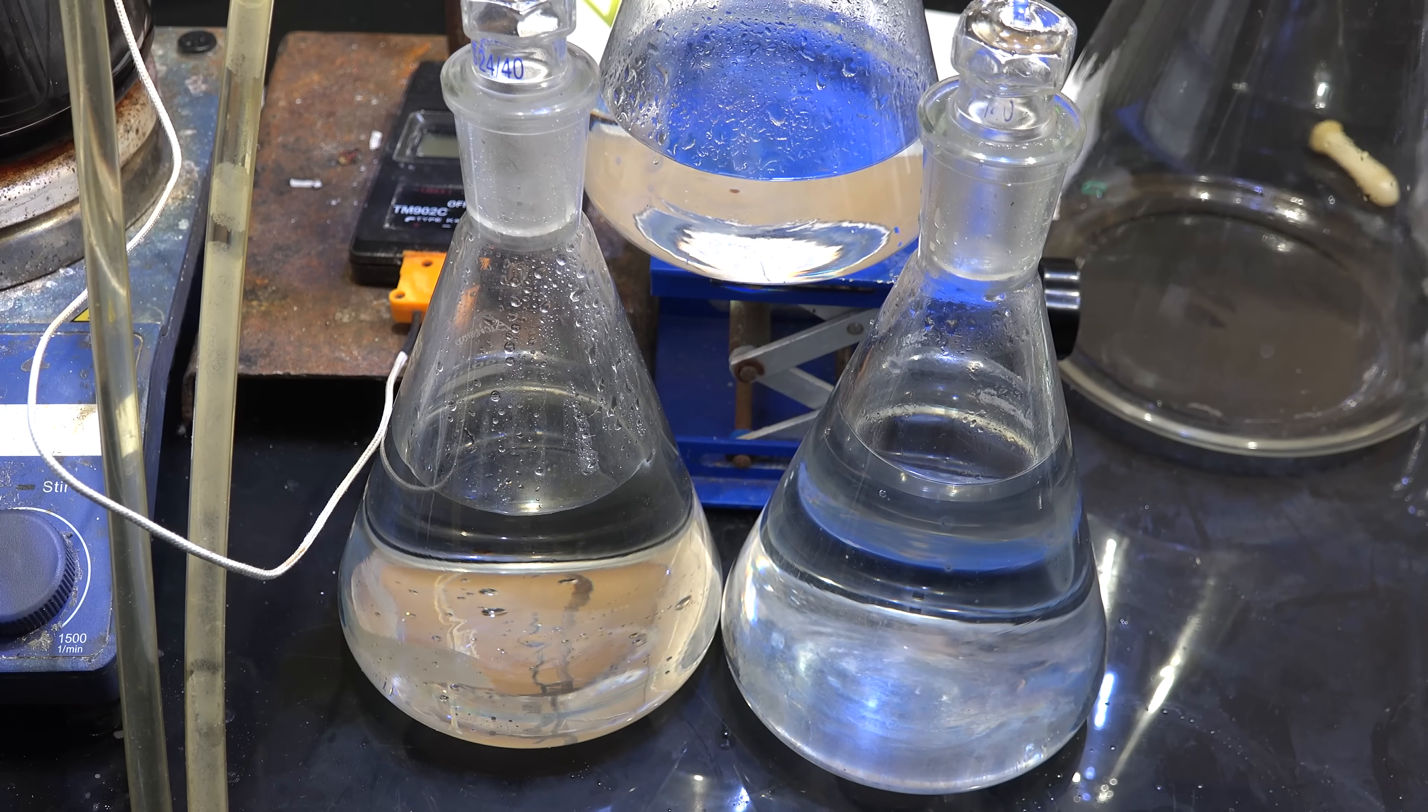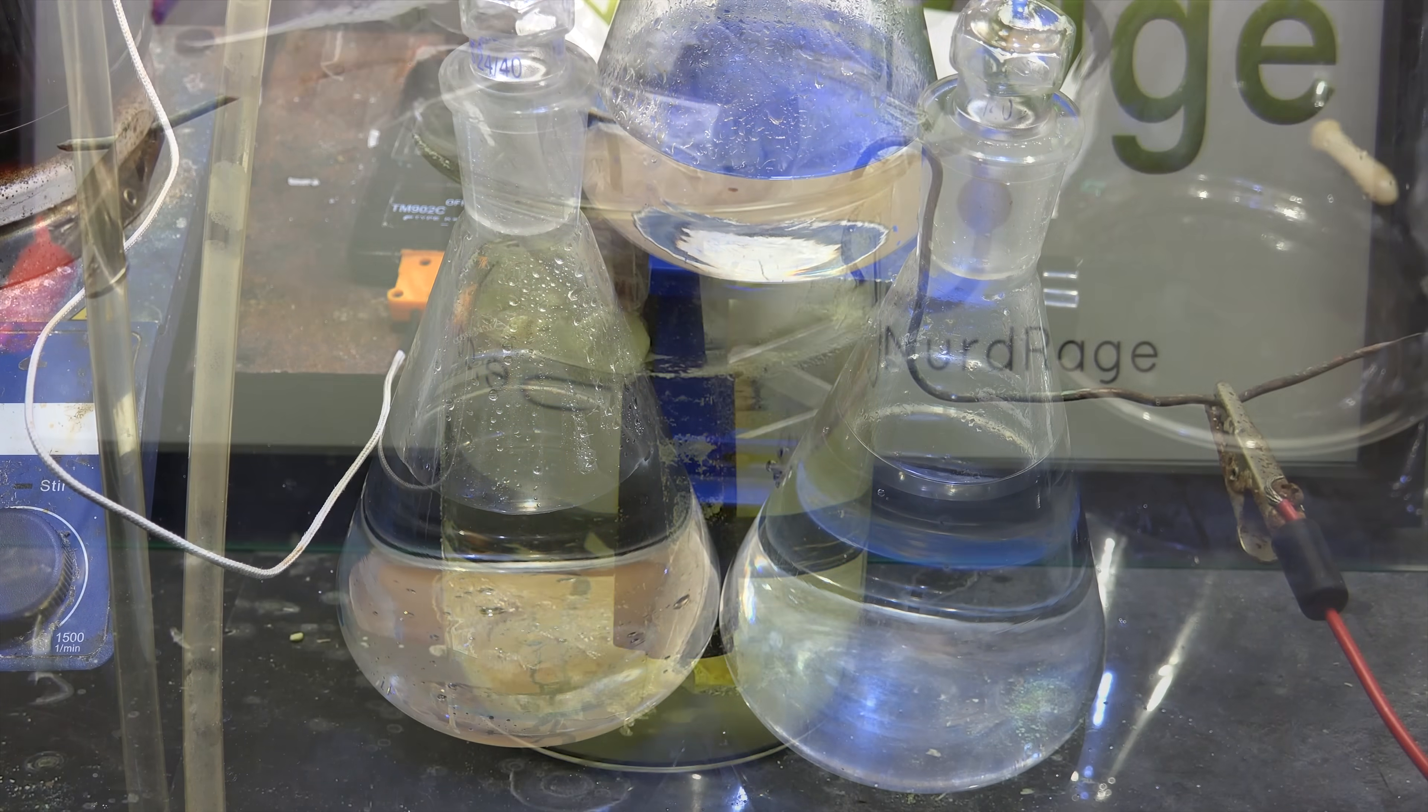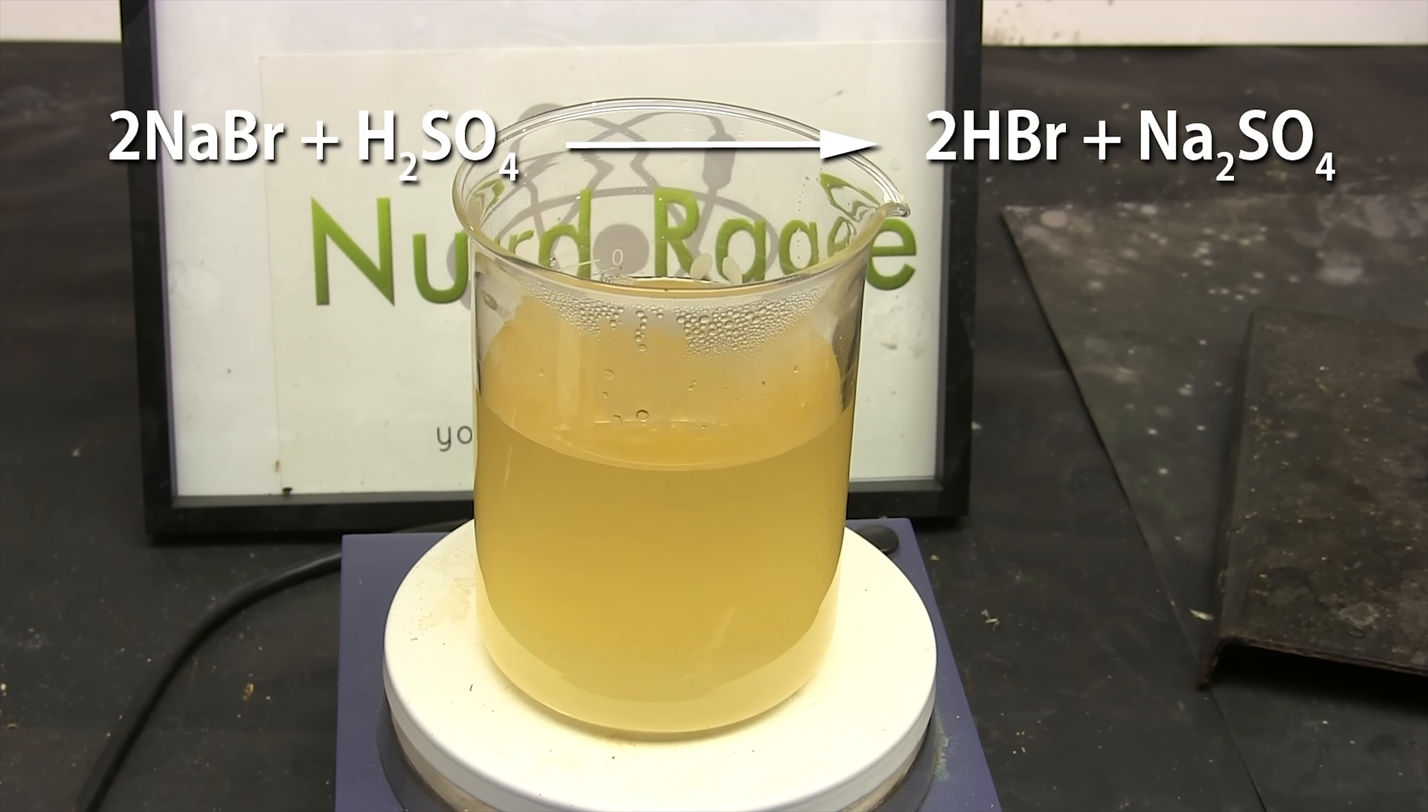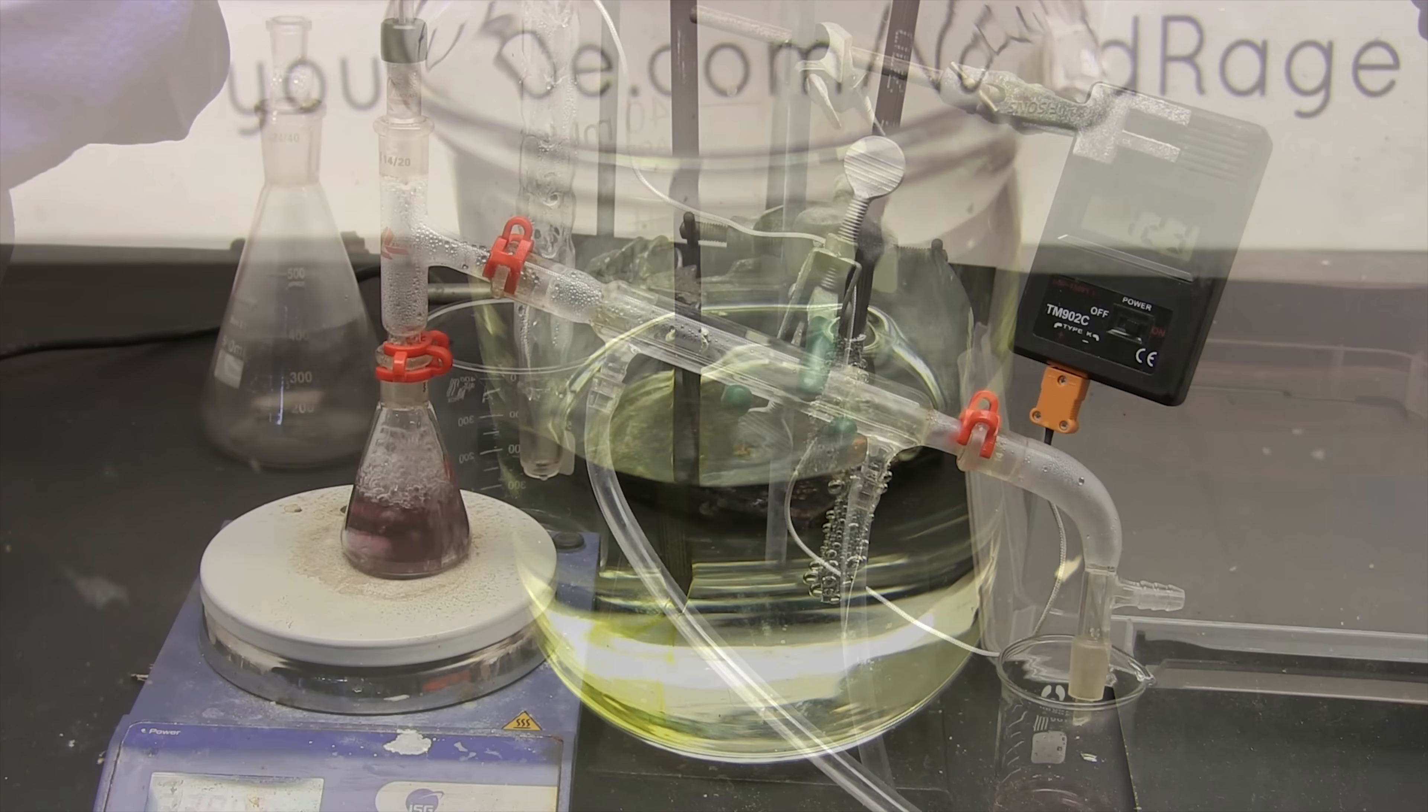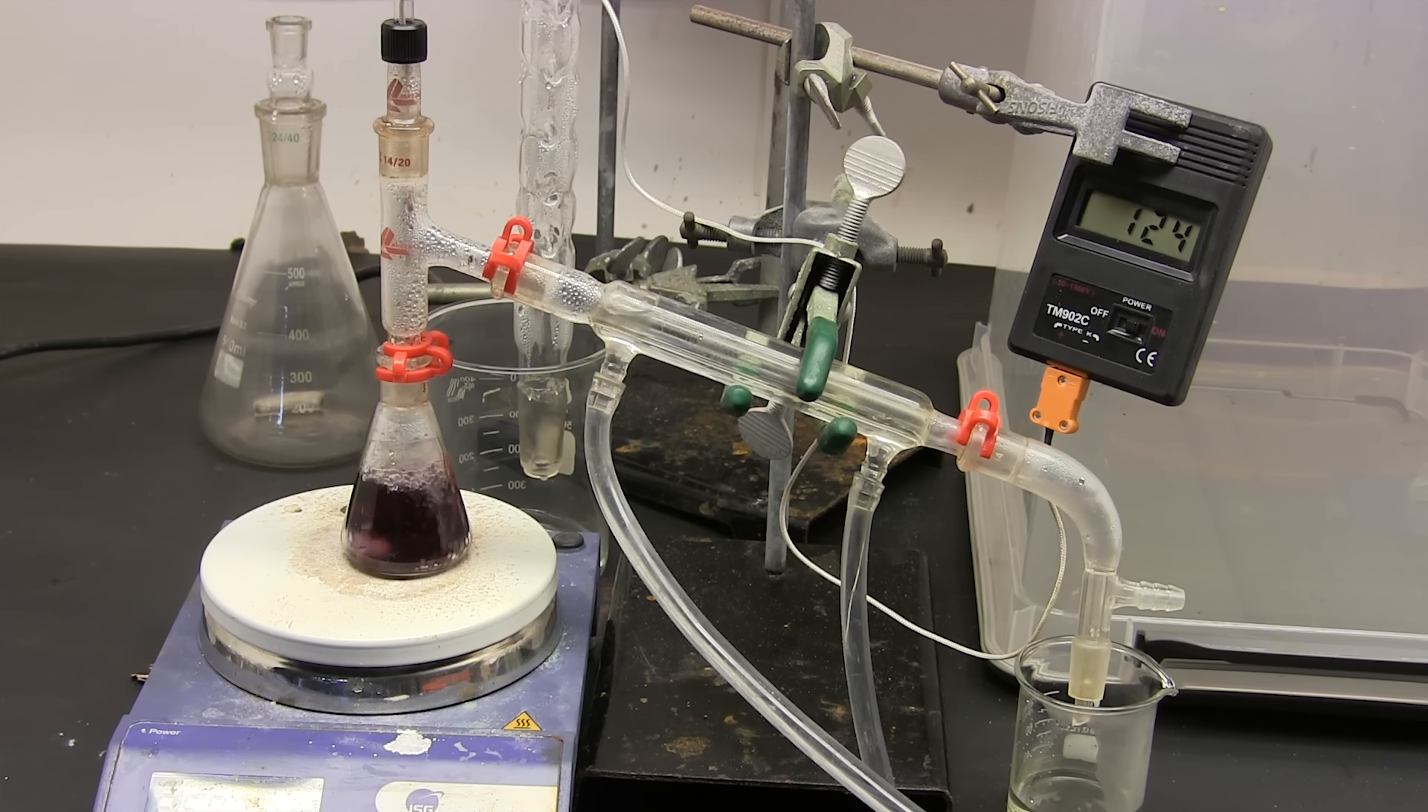Greetings fellow nerds. So I needed to replenish my stocks of hydrobromic acid. Now I've already made a video on this some time ago and if you'd like to see that one then you can check the video description. At that time I used a low yielding sodium bisulfate based process. I also purified the hydrobromic acid from bromine contamination using copper metal.